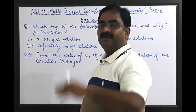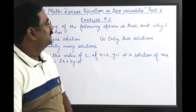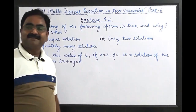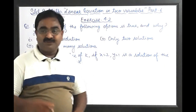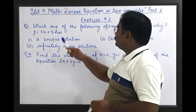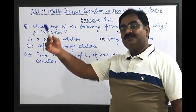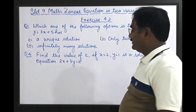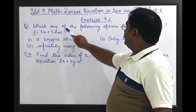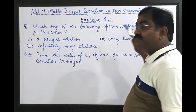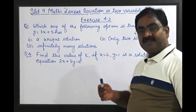I think Exercise 4.1 and a few examples we have completed. So after completion of those things, we are going to start today Exercise 4.2. In Exercise 4.2, the first question is: which one of the following options is true and why? This is an objective question and there are three options given. We have to give the answer with reason.